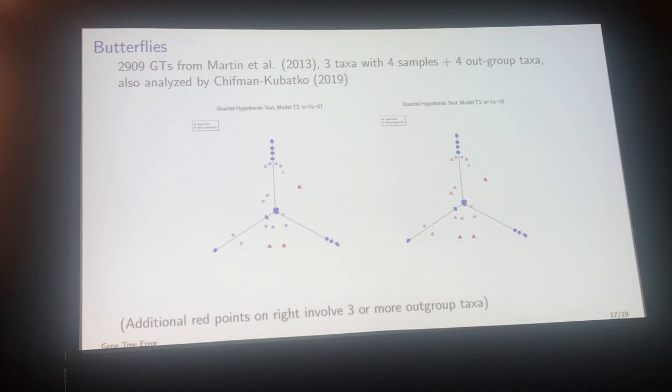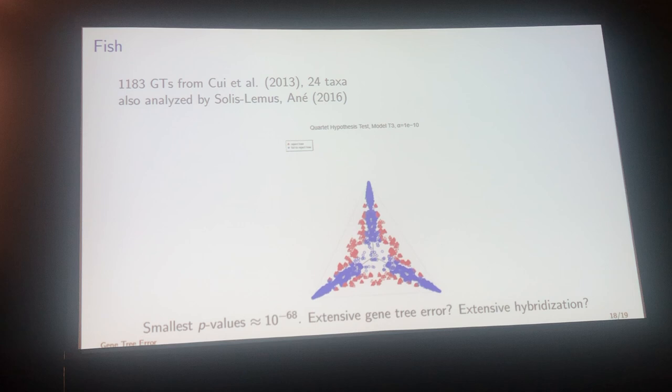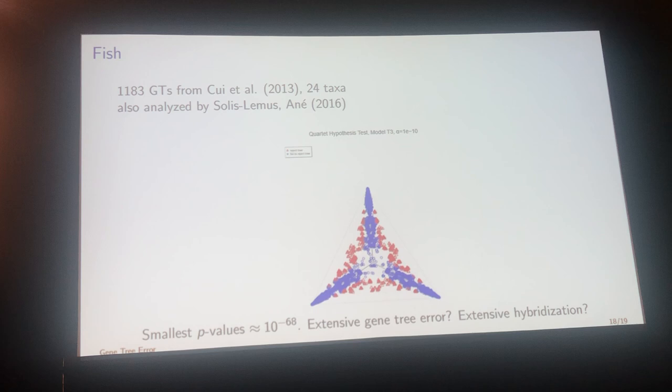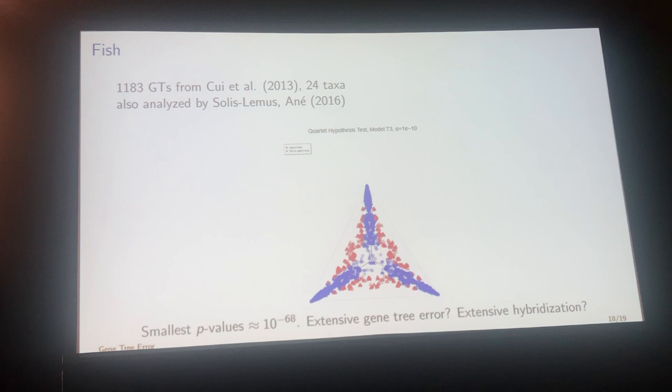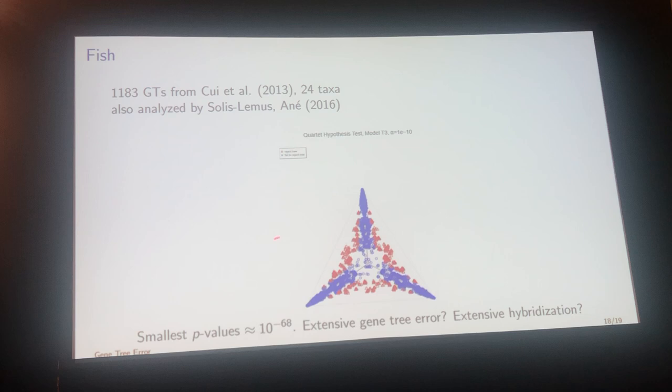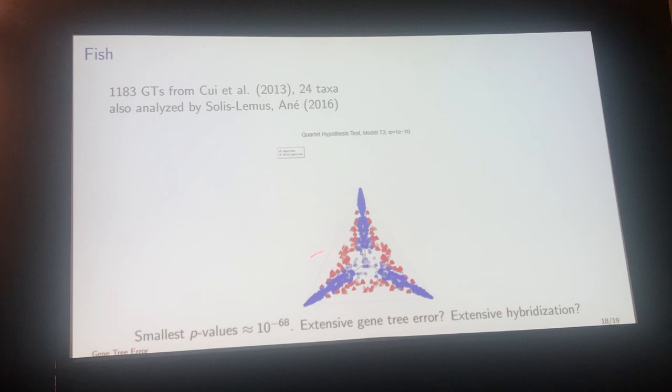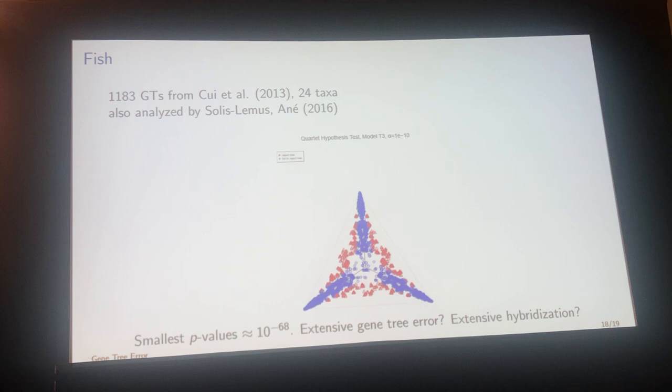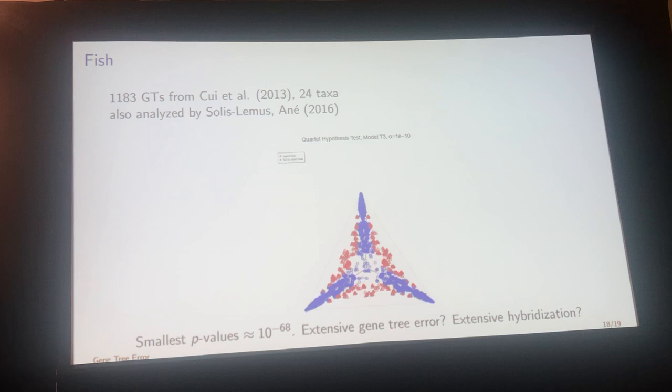The final example is a fish data set with a large number of gene trees, analyzed by several groups. The paper argued strongly for hybridization, but unlike the other cases you don't see any real separation of the red points from the blue points. Whether they represent extreme inference error or hybridization, based on this plot you simply cannot tell — it requires more analysis.